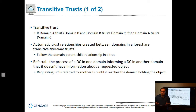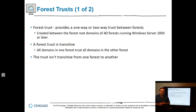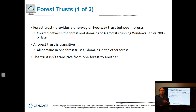Referral is the process of a DC in one domain informing a DC in another domain that it doesn't have the information about a requested object, so it requests a referral until it reaches that information. Forest trusts provide a one-way or two-way trust between forests, created between the root forest domains running Windows Server 2003 or newer. A forest trust is transitive within the forest, but the trust isn't transitive from one forest to another — all domains in one forest trust all domains in another, but that transitivity doesn't extend beyond.